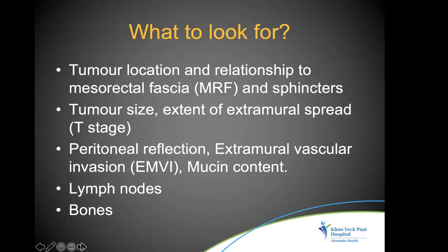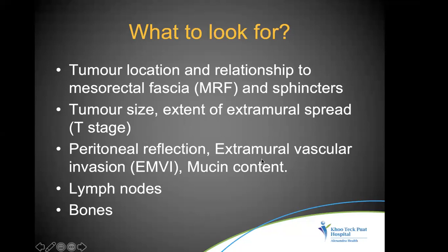On MRI, we look for: tumor location in relation to the sphincters and anal verge, mesorectal fascia and sphincters, tumor size and length, extramural spread, peritoneal reflection, extramural vascular invasion, mucinous content (MRI is excellent for this since biopsy can have sampling errors), lymph nodes, bones, and other visible organs.